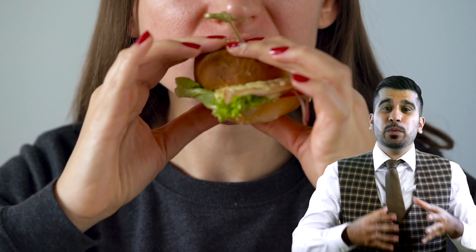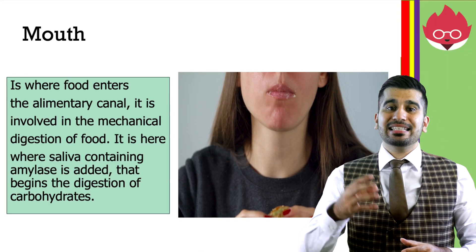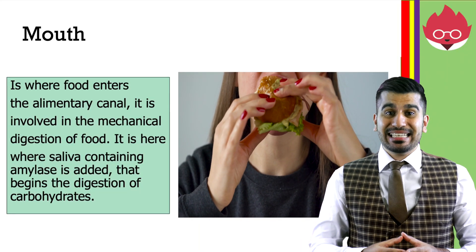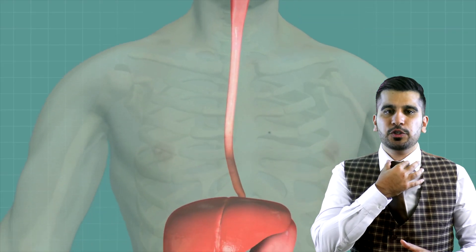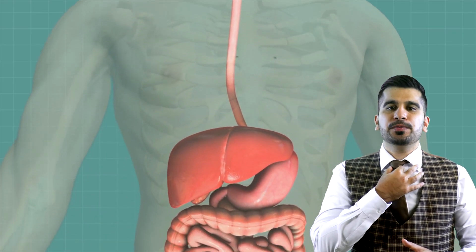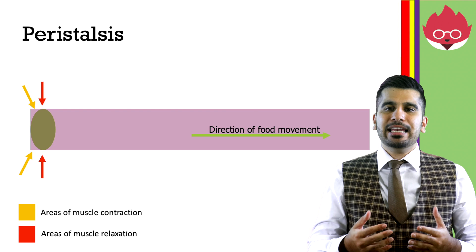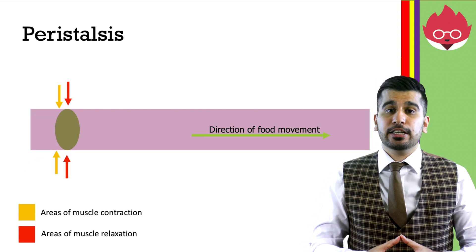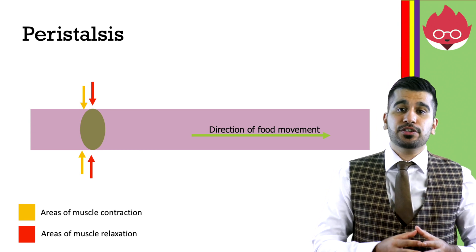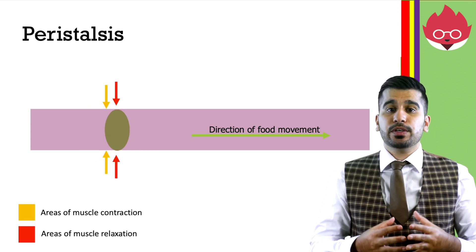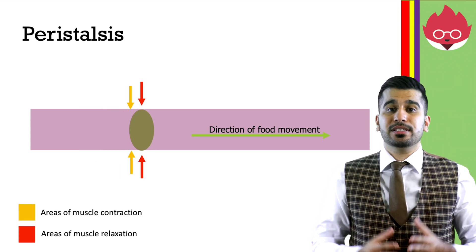The mouth is where food enters the alimentary canal. It is involved in the mechanical digestion of food, which we can see through chewing. It is here where saliva containing the enzyme amylase is added, and that begins to break down carbohydrates. The oesophagus is a muscular tube which moves food to the stomach. Movement along the alimentary canal happens via muscular contractions called peristalsis. Contraction and relaxation of muscles in the oesophagus allow food to be moved towards the stomach.